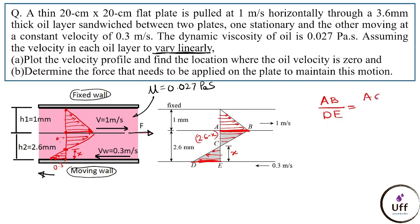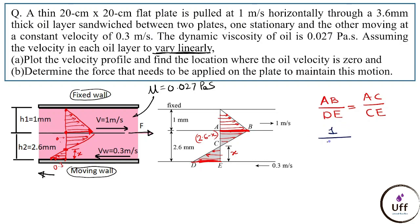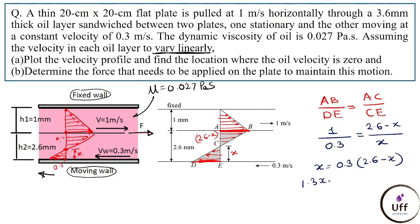Putting in the values: AB is 1 meter per second, DE is 0.3 meter per second, AC is (2.6 − x) mm, and CE is x. Solving: 1 times x equals 0.3 times (2.6 − x), giving 1.3x equals 0.78, so x equals 0.6 mm.